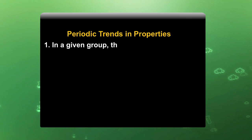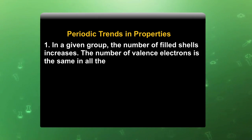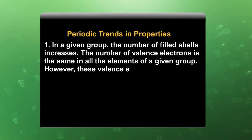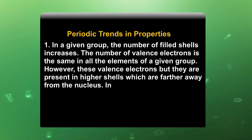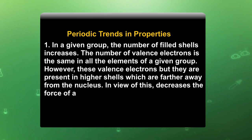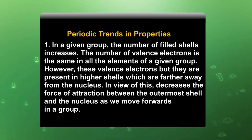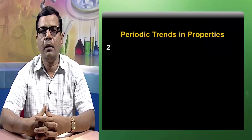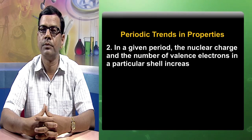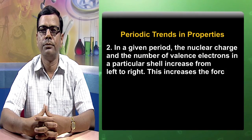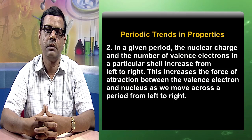In a given group, the number of filled shells increases. The number of valence electrons is the same in all the elements of a given group; however, these valence electrons are present in higher shells which are further away from the nucleus. This decreases the force of attraction between the outermost shell and the nucleus as we move down in a group. In a given period, the nuclear charge and the number of valence electrons in a particular shell increases from left to right. This increases the force of attraction between the valence electrons and the nucleus as we move across a period from left to right.